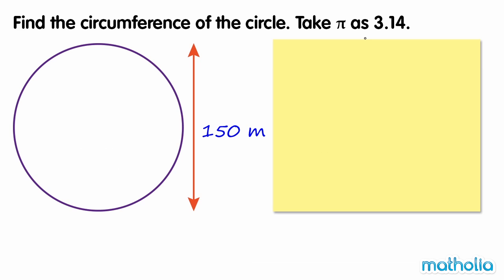Find the circumference of the circle. Take pi as 3.14. We can find the circumference by multiplying pi by the diameter. In this case, we take pi as 3.14, and we can see the diameter is 150 m.